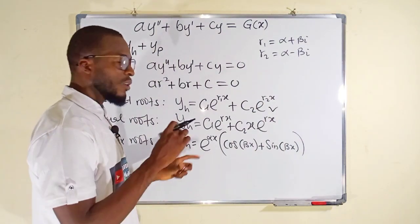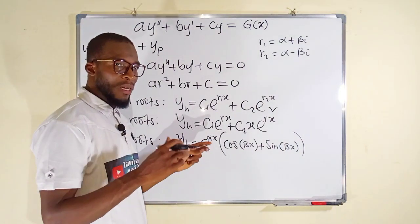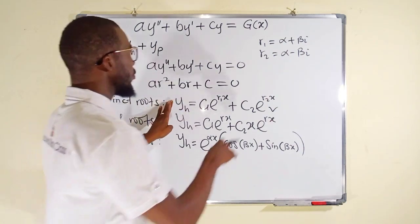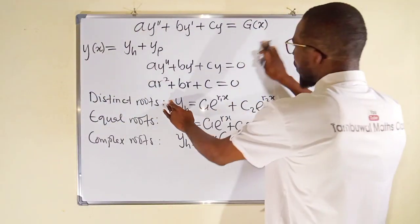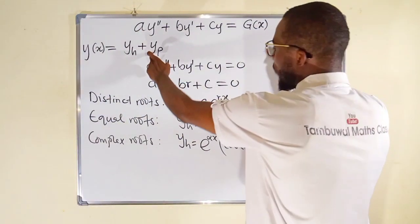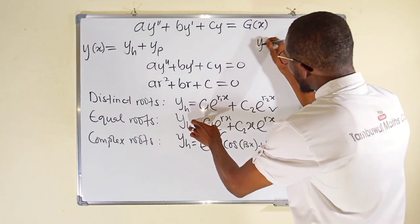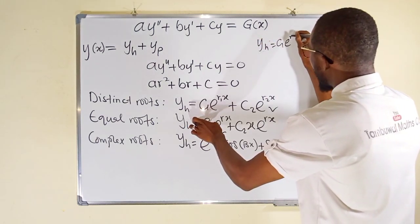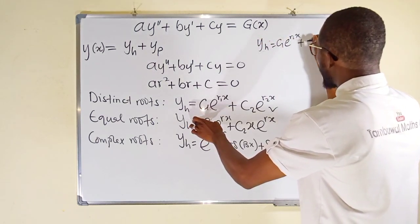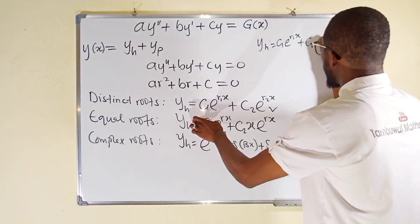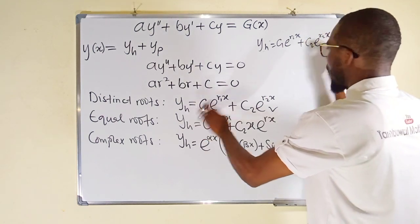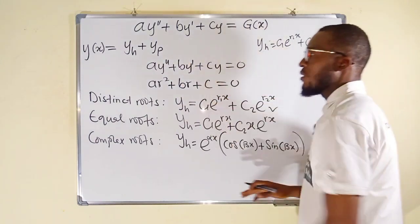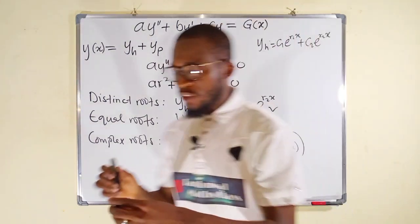I told you I am not going to solve any problem — I'm taking you through the various steps. So, assuming we have real and distinct roots, y sub h equals c1 e to the r1 x plus c2 e to the r2 x. Let me keep that aside and go for the particular solution.